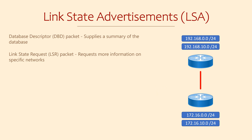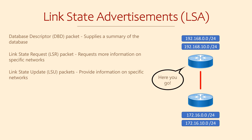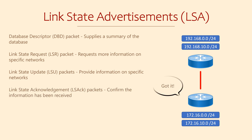The router that receives this request will send back Link State Update packets. DBD packets only contain LSA headers to summarize network information. LSUs, though, contain full LSAs — that is, they contain detailed information about requested links. Routes, next hops, and their metrics go into a separate table. Finally, routers need to acknowledge that they receive this information, using a Link State Acknowledgement packet.